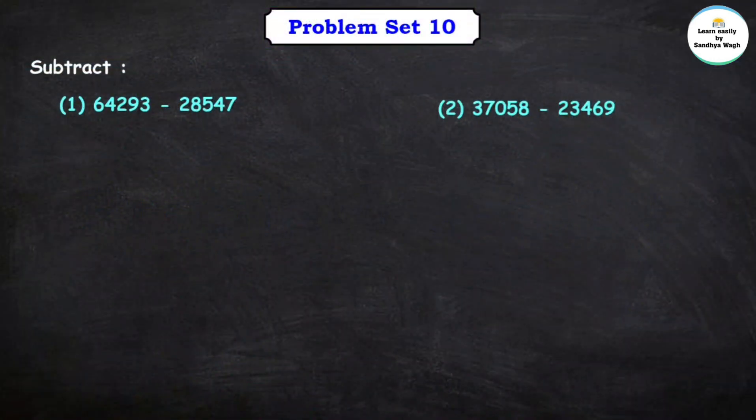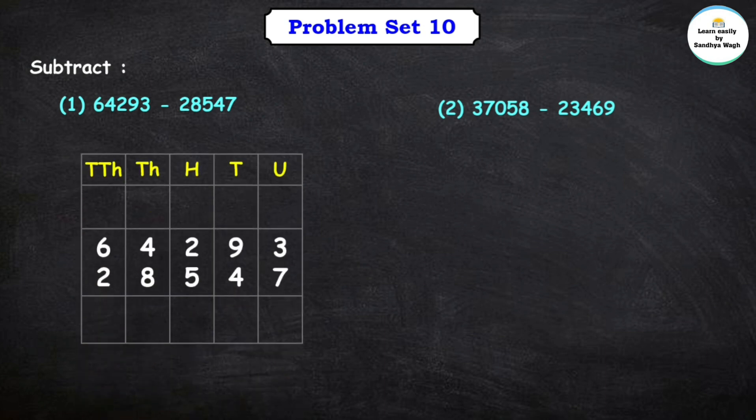Subtract 64,293 minus 28,547. For subtraction, we will arrange the numbers. Let's put the subtraction sign — the subtraction sign is very important.